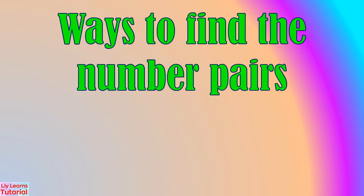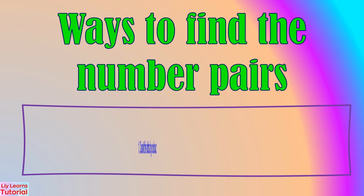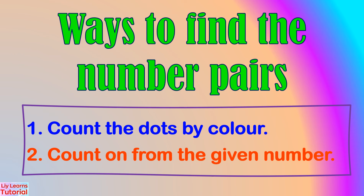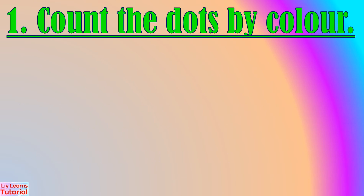There are two ways to find the number pairs. First, count the dots by color. Second, count on from the given number.